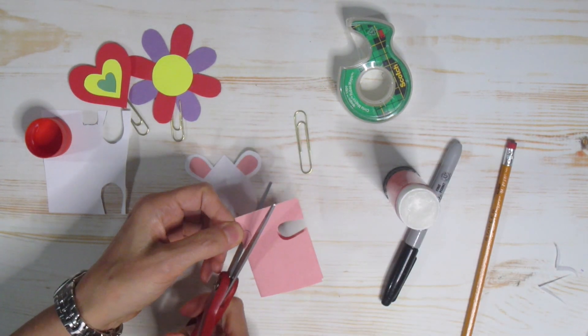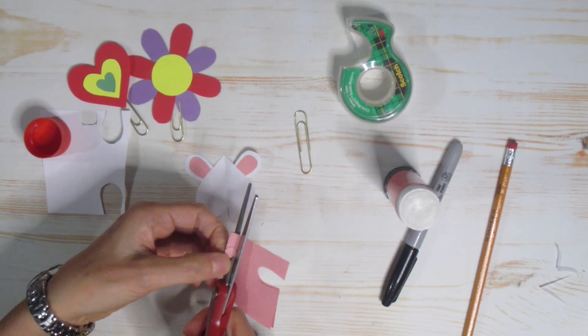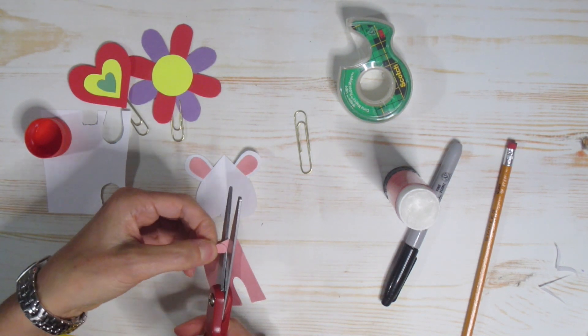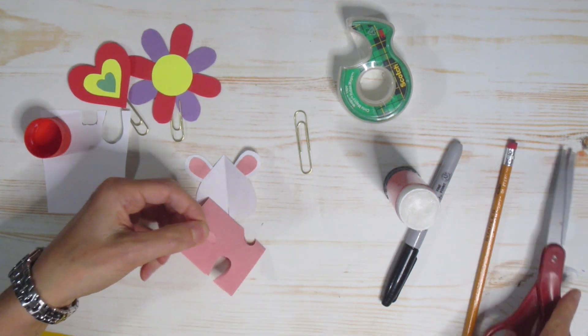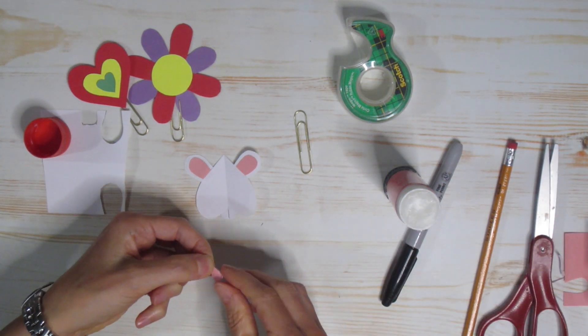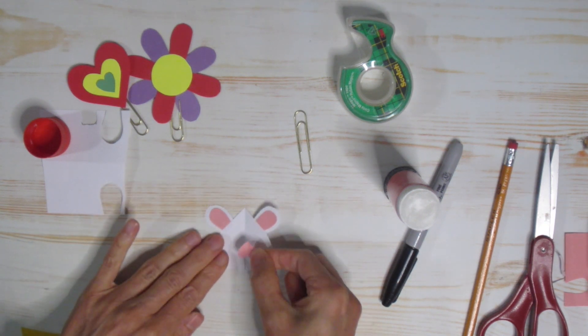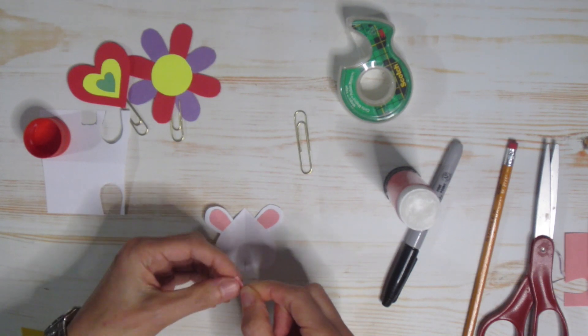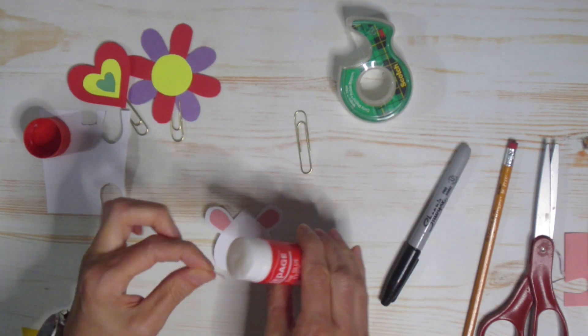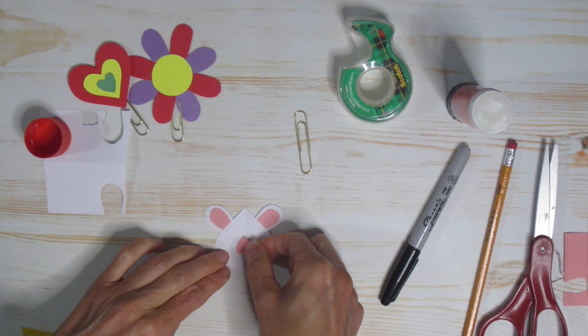If you find it pretty tricky because it's such a small little heart, you can always just use a circle. It would be cute to use a little pom pom for this as well. You could draw the nose on. Lots of different ways that you could create your little nose. See if it's okay. I think it's perfect. I'm going to glue that nose on. Here we go, here we go.